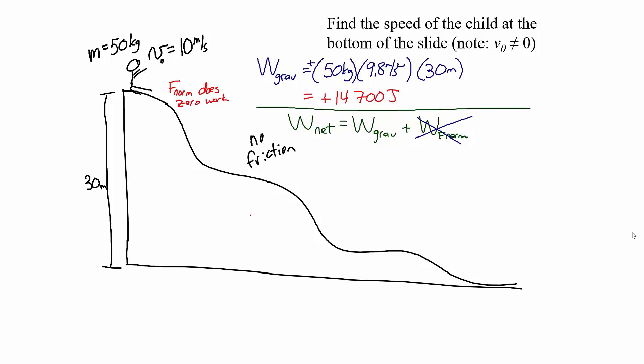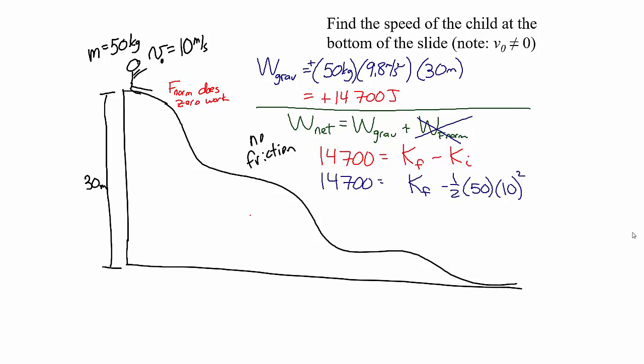The net work done equals the change in kinetic energy. So the net work done, 14,700 joules, equals the final kinetic energy minus the initial kinetic energy. Here's where you have to be careful — this did not start from rest, so the initial kinetic energy is not zero. The change in kinetic energy of 14,700 joules equals the final kinetic energy minus the initial kinetic energy.